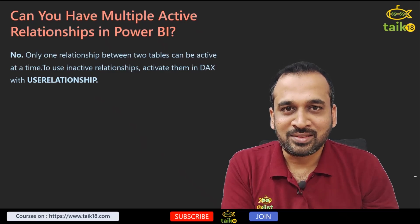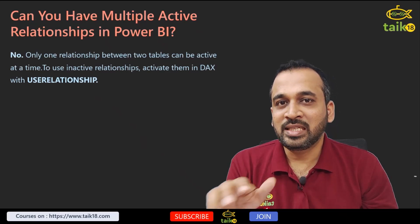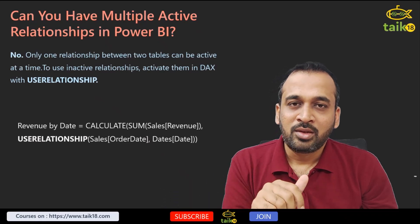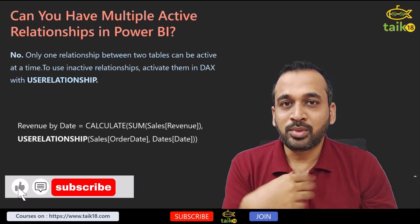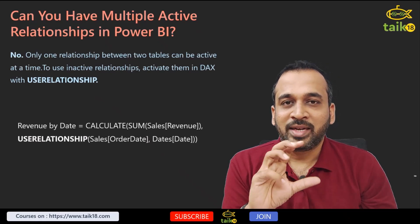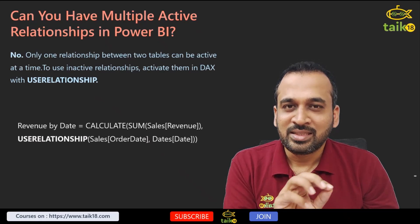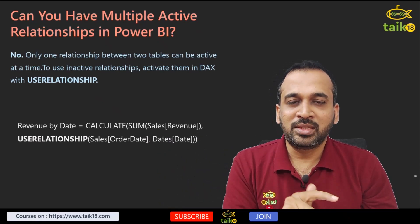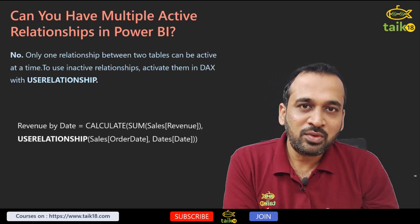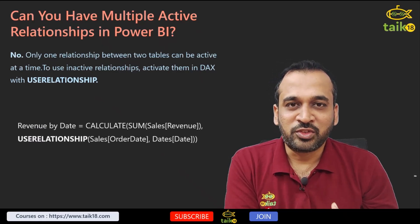A good follow-up question is: if we cannot create multiple active relationships, what if we want to get data from an inactive relationship? For example, you have a connection between a sales table and a date table with both an order date and a shipment date. If you want to get data from both at the same time, you can use the USERELATIONSHIP DAX function, which activates an inactive relationship for a specific calculation. Compared to other tools that support multiple active relationships, Power BI does not yet support this, but USERELATIONSHIP fulfills that need.